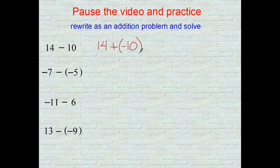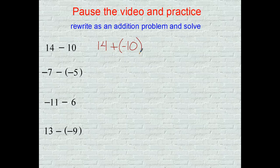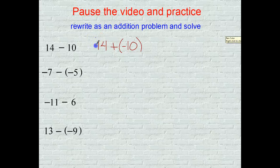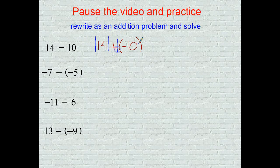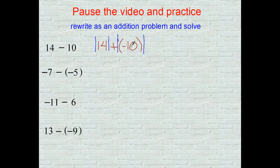So if I have 14 added to the inverse of 10, we're going to take our rules for adding and take the absolute value of both. We have opposite signs, so we're going to subtract the numbers and get some kind of 4.